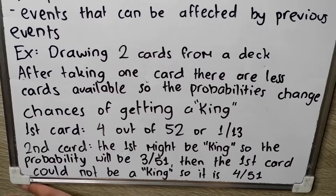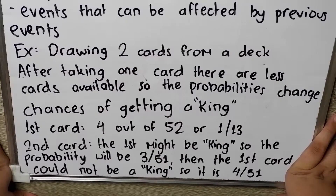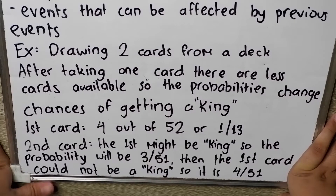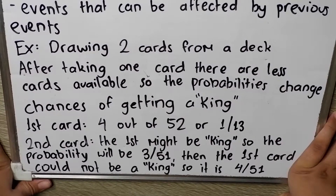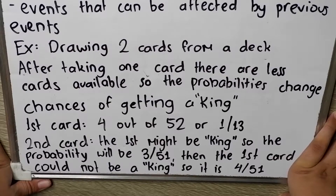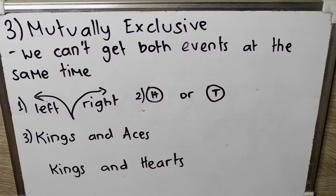Let's look at the chances of getting a king. The first card is 4 out of 52 chances of getting a king, or 1/13 chances of getting a king. For the second card, if the first might be a king, so the probability will be 3 out of 51. Then, if the first card could not be a king, so it is 4 out of 51.